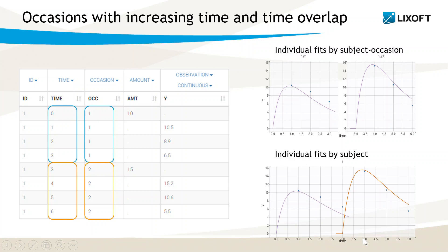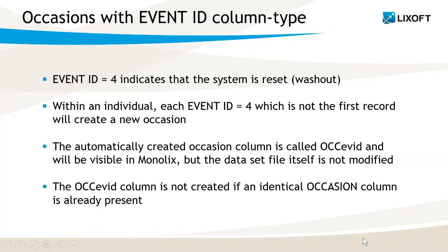Of course, it is possible to define a washout even if the times do not overlap across occasions. This can be done with the column event ID by including a value 4 in the column at the time of washout.